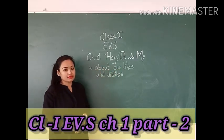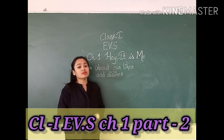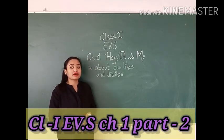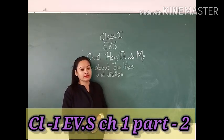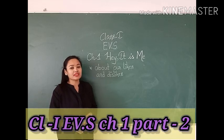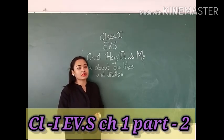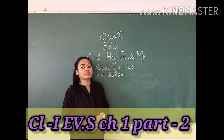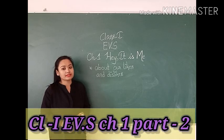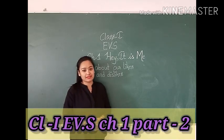Likes means the thing that we want to do, that we enjoy doing. And dislike means the thing that we don't like to do, or that we don't enjoy doing. For example, we have many likes and dislikes.